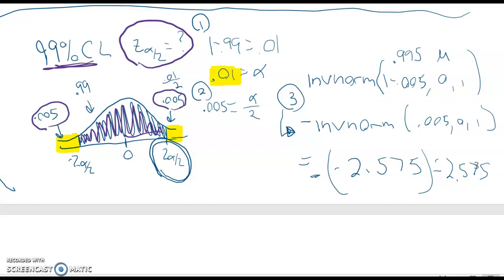So then what I can do is I'm finding the critical value that has an area of 0.99 plus 0.005 or 0.995 to the left. So I can do inverse norm of 0.995 comma 0 comma 1 and that'll give me 2.575.